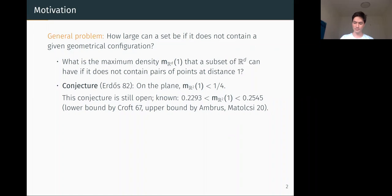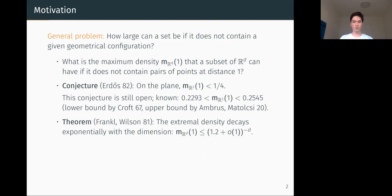For higher dimensions, there is a famous theorem of Frankl and Wilson that implies the extremal density decays exponentially with the dimension — specifically, the extremal density of a set not containing two points at distance one is at most 1.2 to the power of minus the dimension. This has been improved somewhat, but we still don't know if it's less than 1.3 to the power of minus the dimension.